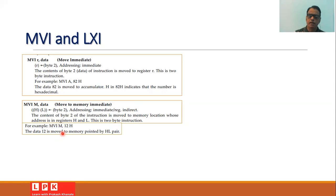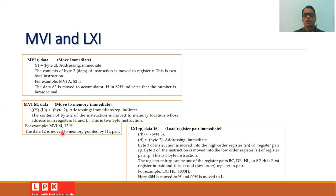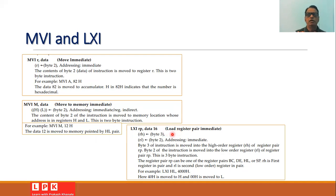Another instruction is LXI — load register pair immediate. Its format is LXI RP, 16-bit data. The immediate 16-bit data is loaded into the register pair. This is a three-byte instruction where byte 3 is moved to the higher-order register and byte 2 is moved to the lower-order register of the register pair. The addressing used is immediate addressing.